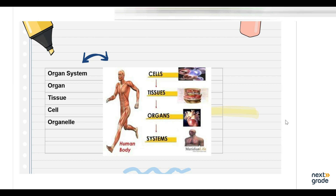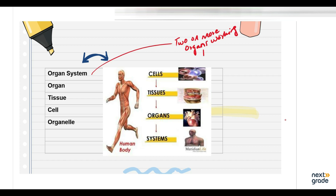Now there is the organ system level. What is the organ system level? When there are two or more organs working together in order to execute a specific body function — for example, the nervous system. The whole nervous system is an example of an organ system.